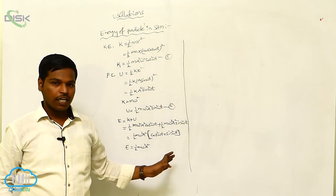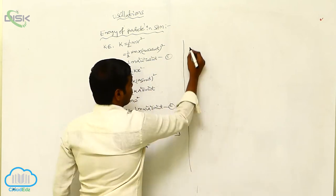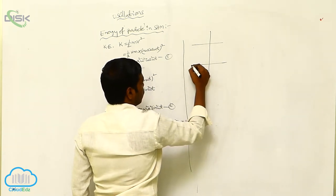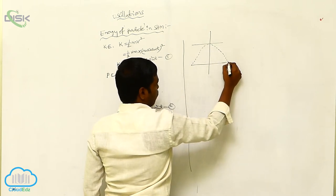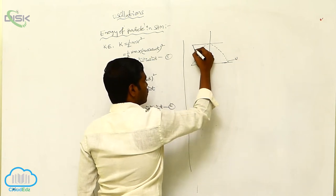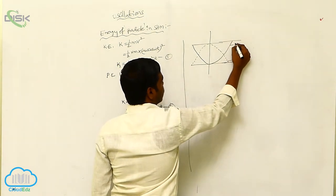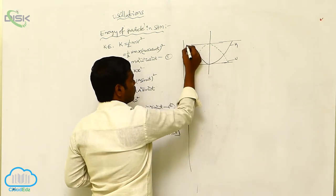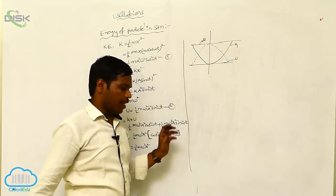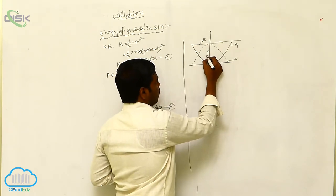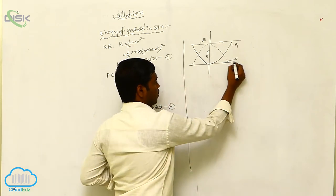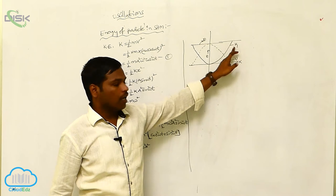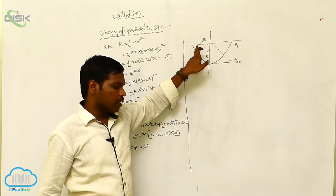If we take the graph of this total energy, the dotted line curve denotes the potential energy, this curve denotes the kinetic energy, and this line denotes the total energy E of the particle along the x-axis.